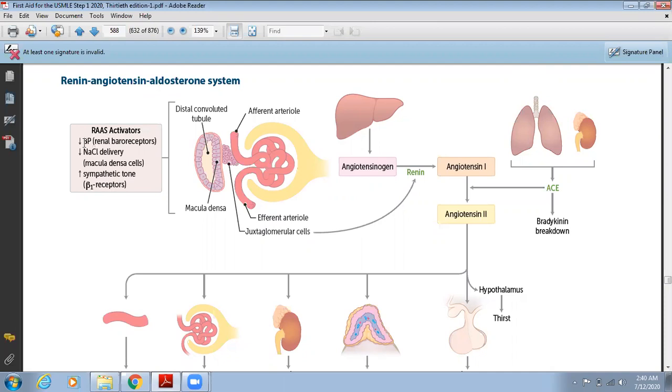First one is when there is decreased blood pressure in the renal artery, the renal baroreceptors are activated. Second is decreased sodium chloride delivery to the macula densa cells. Macula densa loves sodium, so whenever there is decreased supply of sodium in the renal artery, the macula densa senses the decreased sodium.